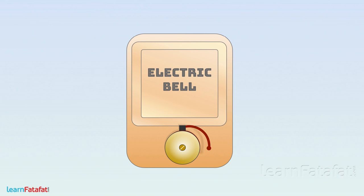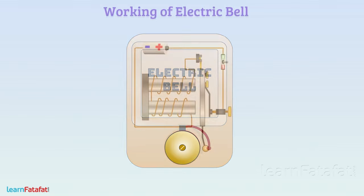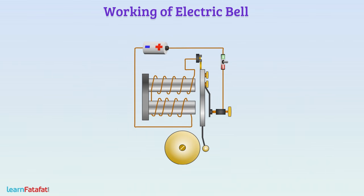An electric bell also uses an electromagnet for its working. Let's understand how it works. Here is a typical circuit of an electric bell. The coil wound over iron rods forms an electromagnet.